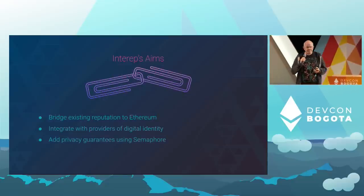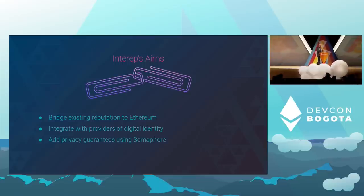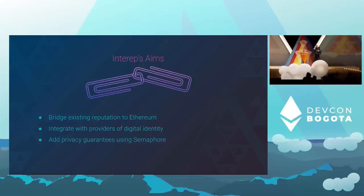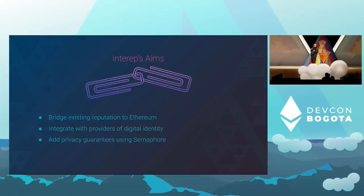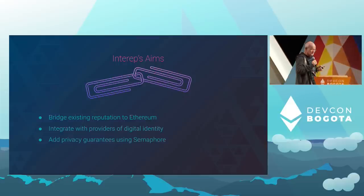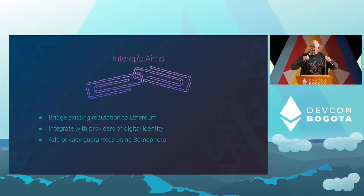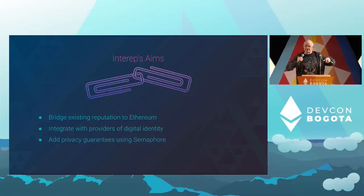What we aim to do is build a bridge from existing digital identity sources to Ethereum, integrate with providers of those identity sources, and privacy is very important to us. So we build on the Semaphore framework and integrate with that. Those building blocks all come together to form the basis of an application.